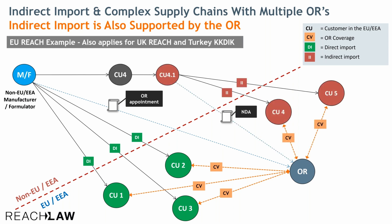When it comes to indirect import, you may have one or several companies outside of the said market — in this case outside of the EU or the European Economic Area — who are also customers of the manufacturer formulator. These companies may be repackaging the substance and then subsequently providing it to another customer down the supply chain, who is no longer visible to the manufacturer formulator, and who then in turn places this substance on the market for new customers.